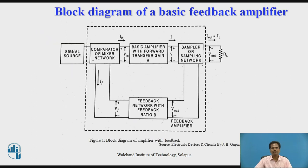This figure shows a block diagram of a basic feedback amplifier. It consists of a basic amplifier. At the input side there is an input signal source connected with a mixer network or comparator, to which the feedback circuit is connected. The feedback circuit is connected between the output and input of the basic amplifier using the comparator or mixer network. One input to the mixer is from the external signal source, and the other is from the feedback circuit, which takes part of the output signal — either voltage or current — using a sampling network, and feeds it back to the input side.